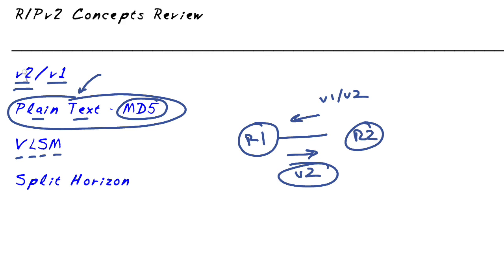Variable length subnet masking we know is possible with version 2 as we discussed, thanks to subnet mask information being sent with updates. And we're going to see there are lots of loop prevention mechanisms we might bump up against, a big one being split horizon.